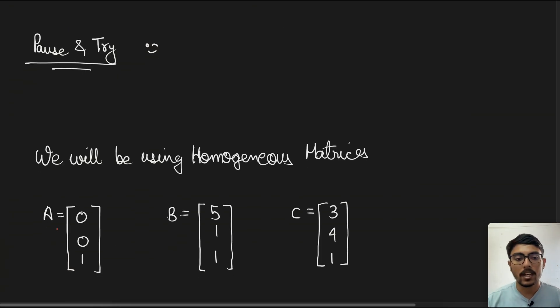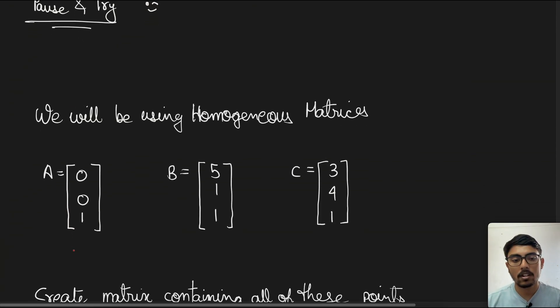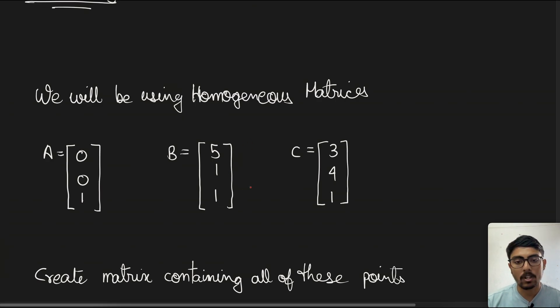The points are as given: A(0, 0, 1), B(5, 1, 1), C(3, 4, 1). This 1 is the constant of homogeneity.